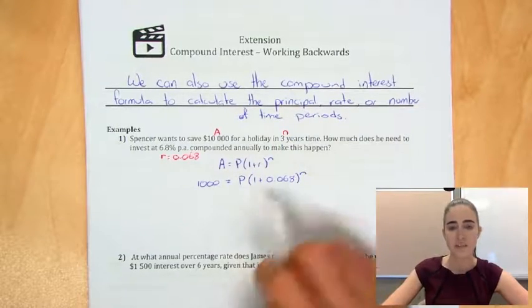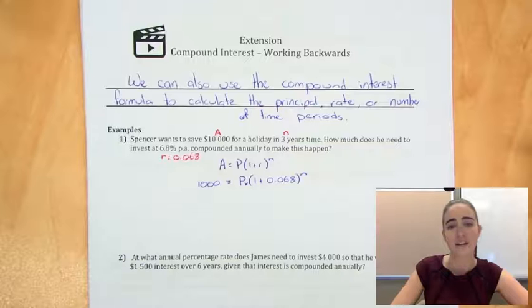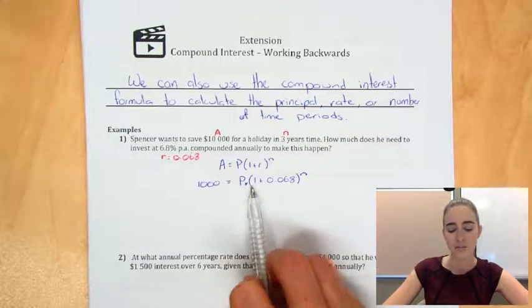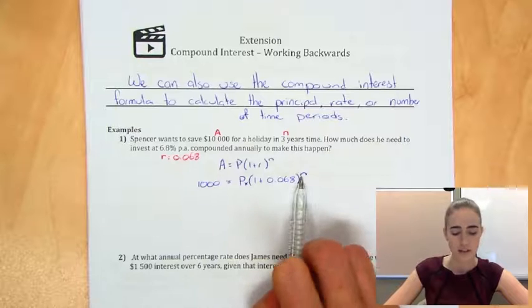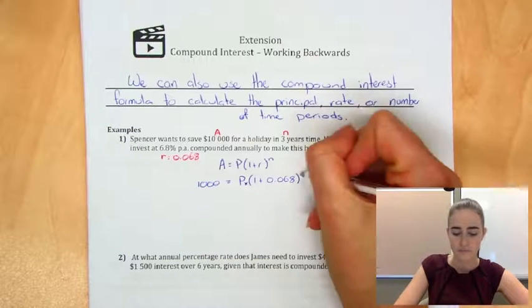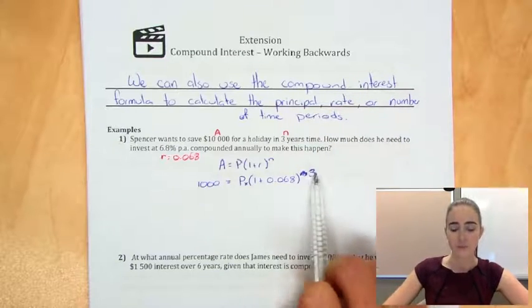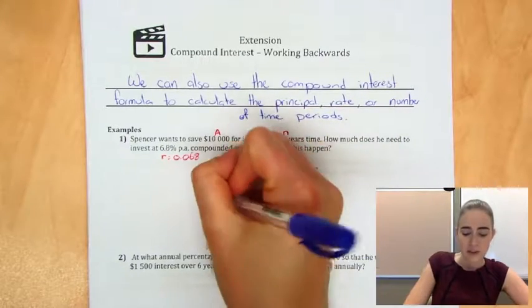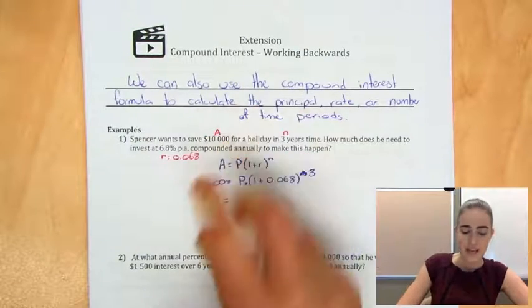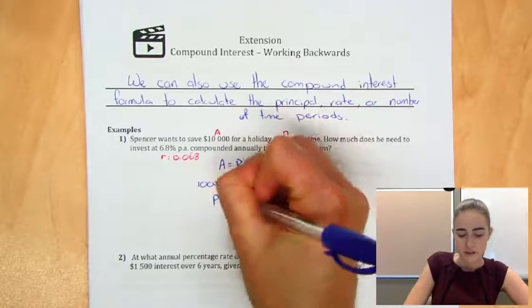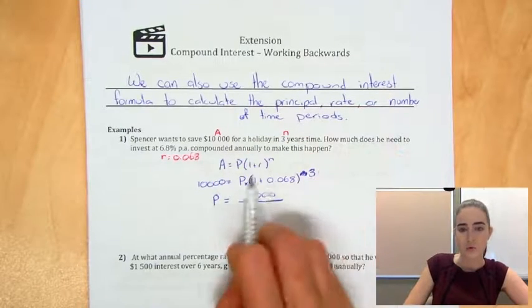Now between the P and the bracket, there's actually a times sign that we don't usually write down. So to get that P on its own, we're going to have to divide by this whole bracket. Oh, sorry, that N should be a 3 because we do know that. So we're going to divide by this whole thing. So our P is going to be that $10,000 divided by this whole term here.